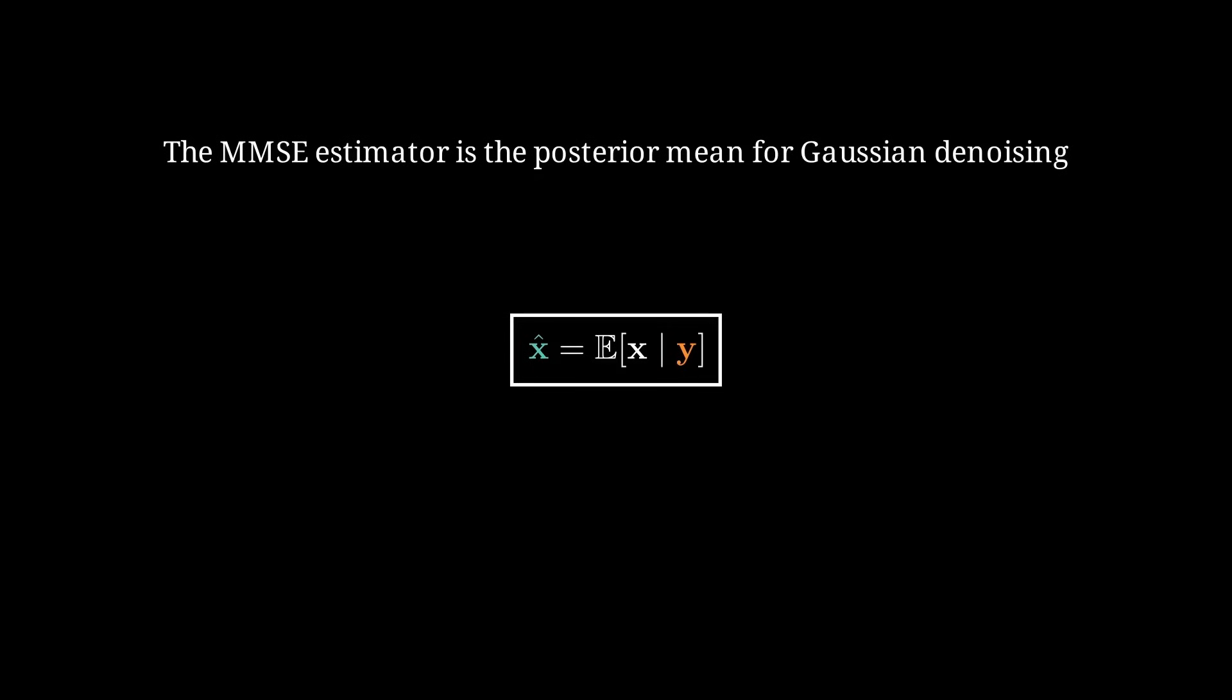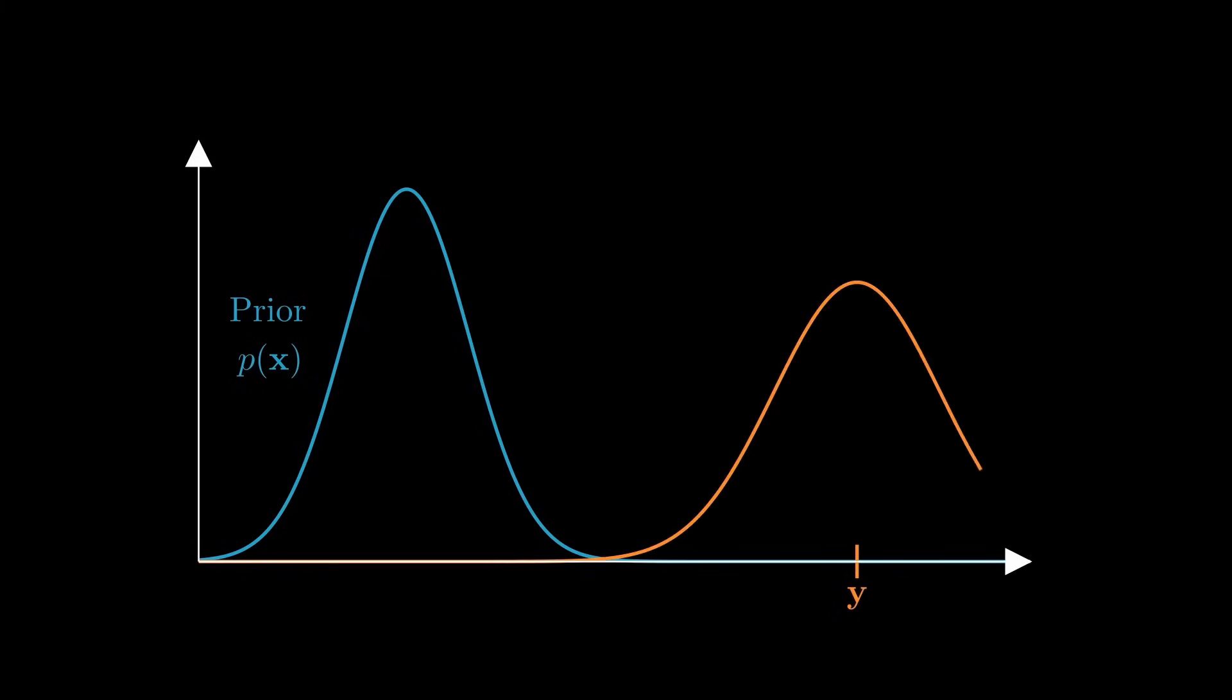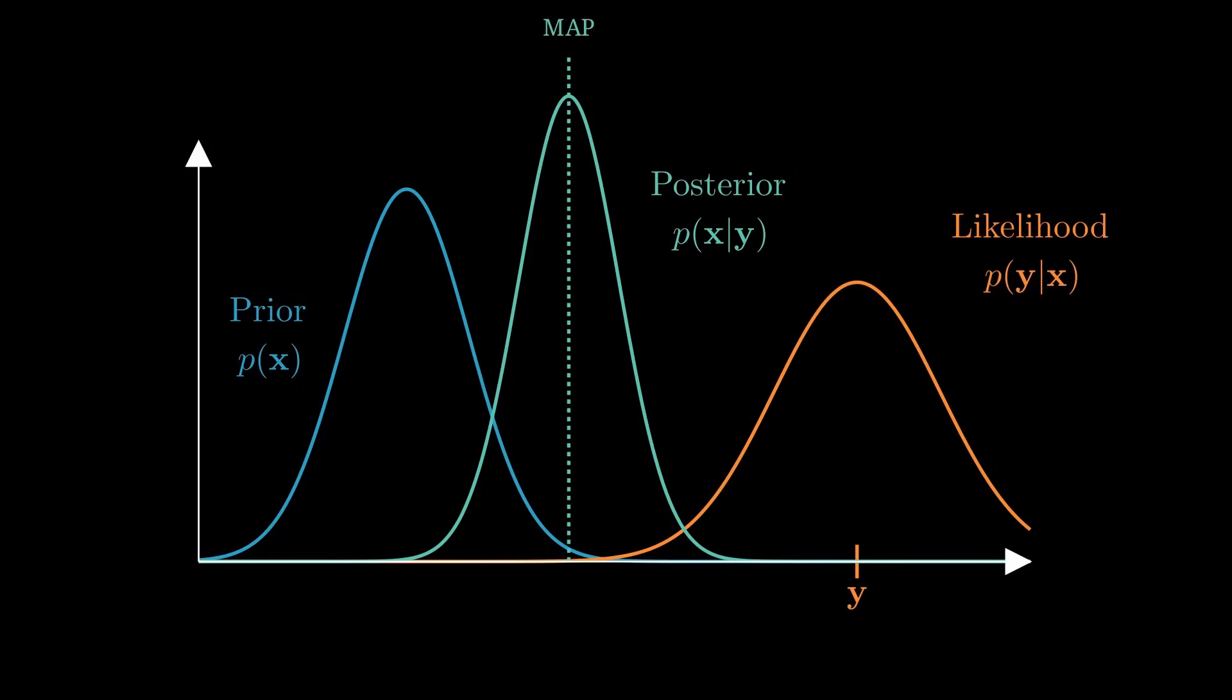Now let's build some intuition with a simple 1D example. Let's say this is the density of the data distribution the denoiser was trained on. For simplicity we take a Gaussian, but in reality this distribution is likely far more complex. Now here is our noisy observation Y, along with the Gaussian likelihood associated with Gaussian noise. Using these two densities we can plot the posterior distribution, which represents how likely a reconstruction X-hat is given the noisy observation Y. This posterior takes into account both the prior, representing the underlying data distribution, and the likelihood, describing how the noise affects the observation. As you can see the most probable reconstruction lies in the middle of these two factors. This point, where the posterior is maximized, is called the maximum a posteriori estimate, or MAP. But where is the posterior mean? Well, in this simple Gaussian example the posterior mean happens to coincide with the MAP.